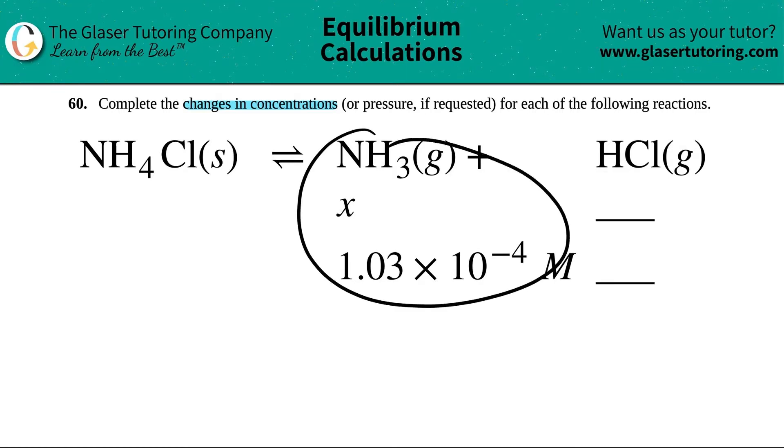Okay, so we always have to start with what we're given. In this case, they gave us NH3 gas, which changed by a factor of X, and that equals this number.